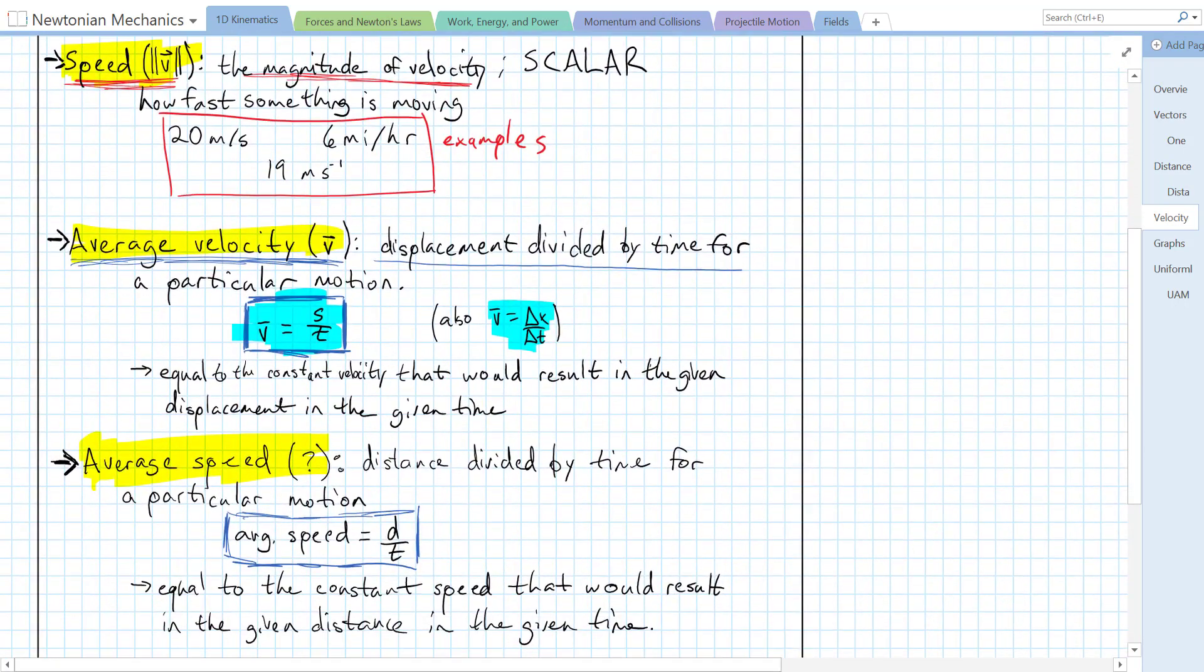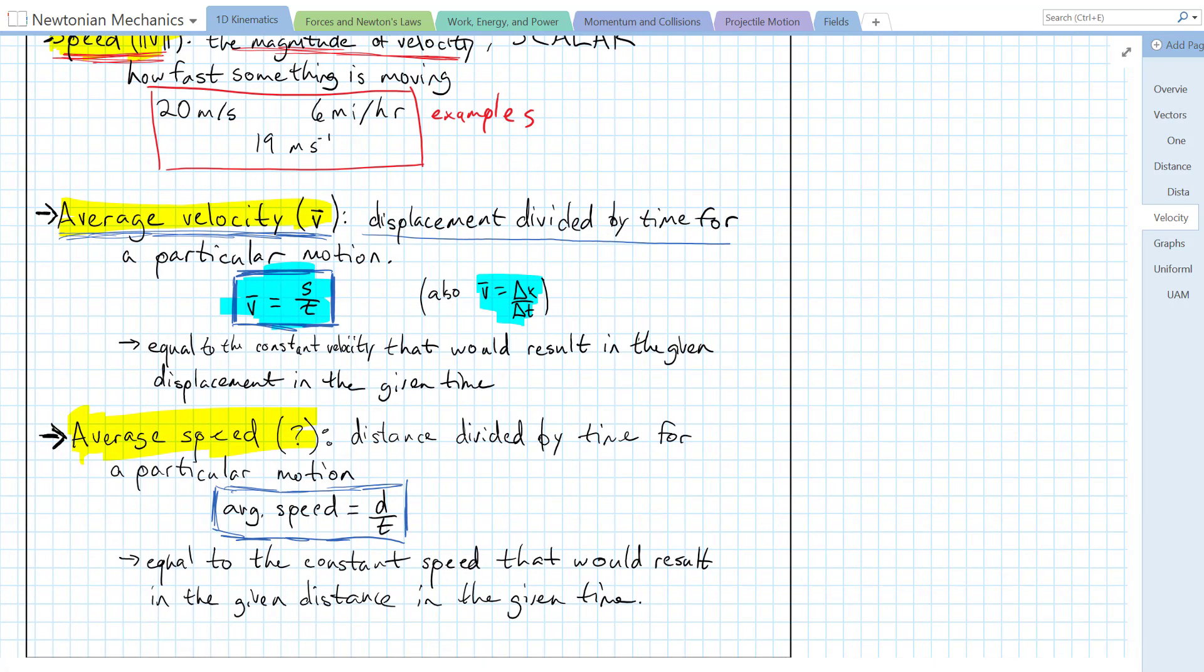Average speed is a scalar version, kind of related to average velocity. It's just going to be the distance divided by time for a particular motion. So average speed is distance over time. And it tells us the constant speed that we would have to travel at that would result in the given distance in that specific amount of time.